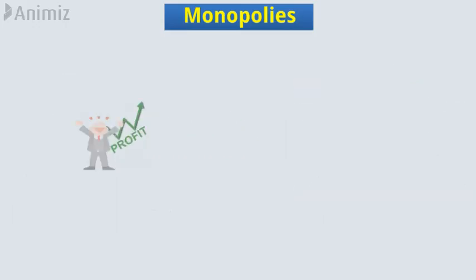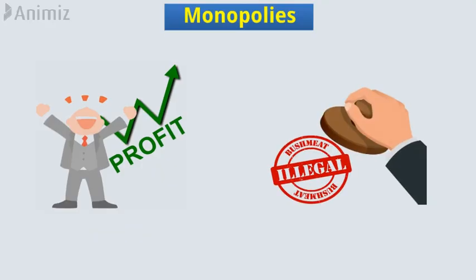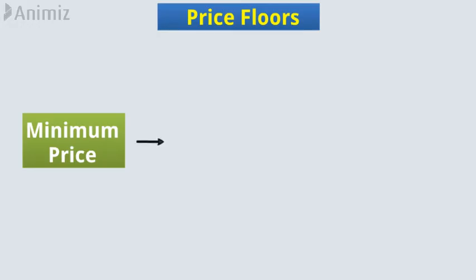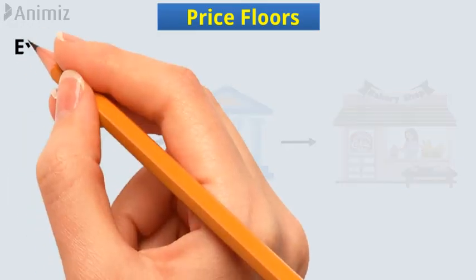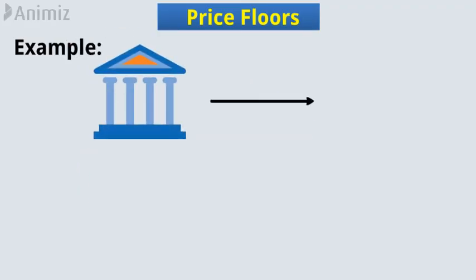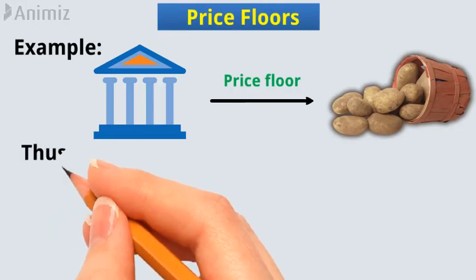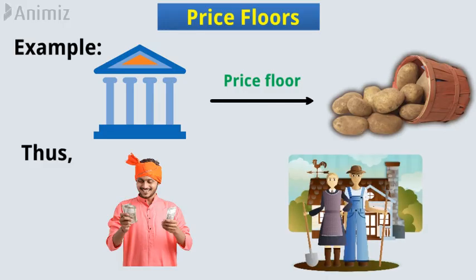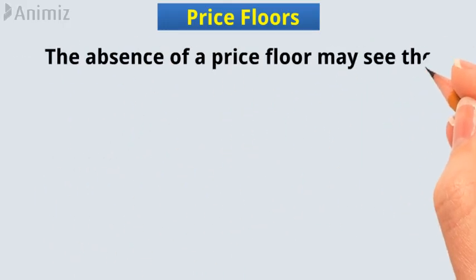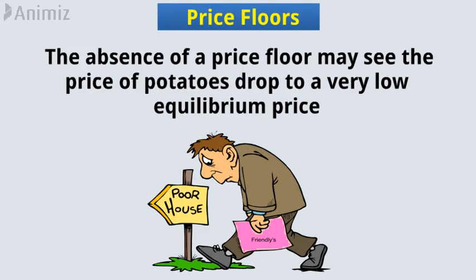The practice is highly profitable for the seller and, in most cases, it is considered illegal. Price floors are a minimum price put in place by the government to protect vulnerable sellers. For example, the government might put in place a price floor on farm goods such as potatoes. Thus, farmers will be guaranteed a certain amount of revenue and will be able to afford a living. The absence of a price floor may see the price of potatoes drop to a very low equilibrium price and farmers go into bankruptcy.